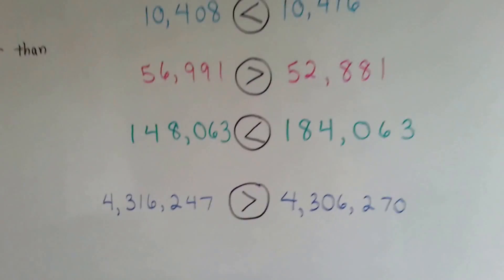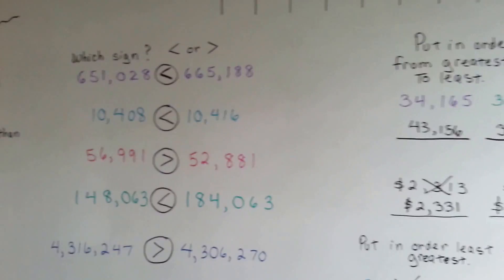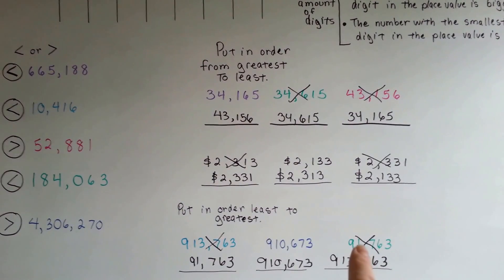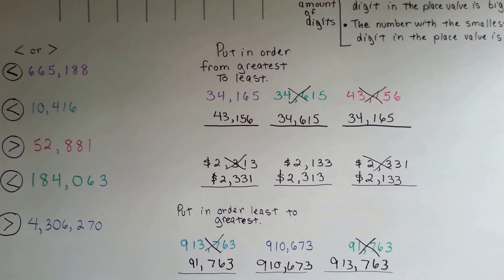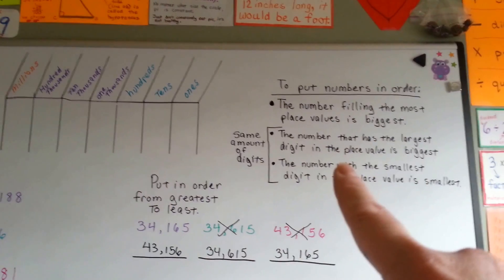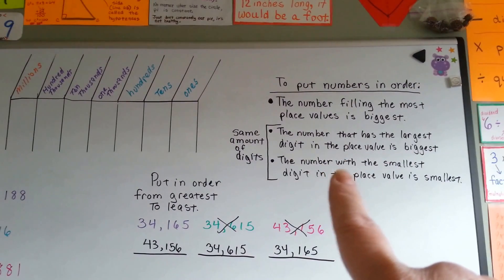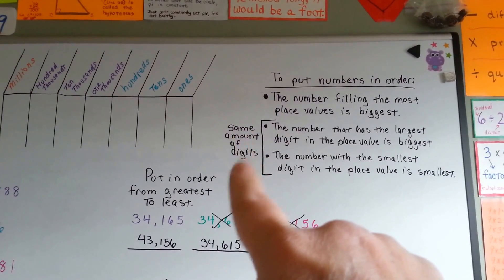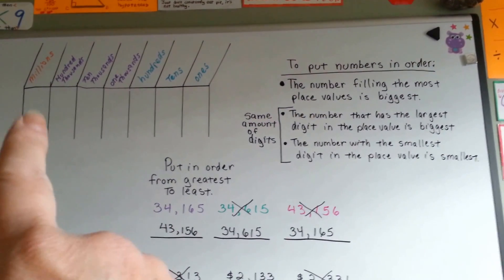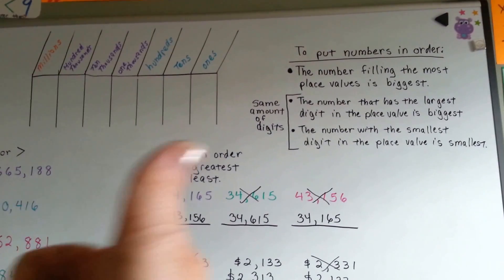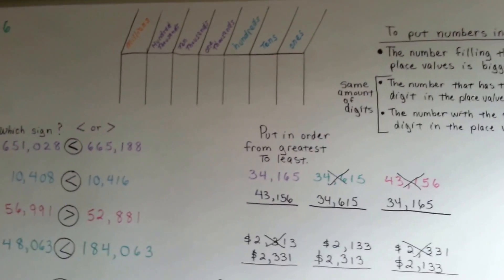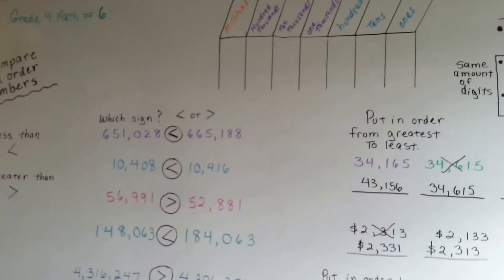Very good. So that's how you compare and order numbers. Look at the place values and see which one has more. Like that 91,000 — it only had five digits in its place value, so we knew it went first right away. If they have the same amount of place values, look for the bigger numbers starting on the biggest side and then move towards the ones. Whichever one has the bigger number, you'll be able to see it right away. Keep up the good work, and I'll see you next video!